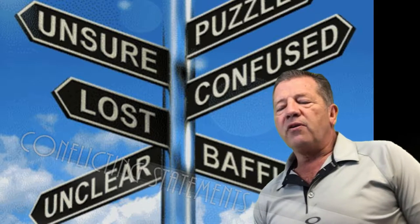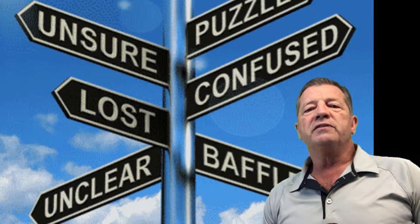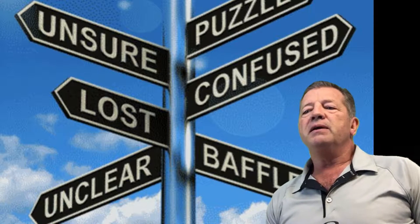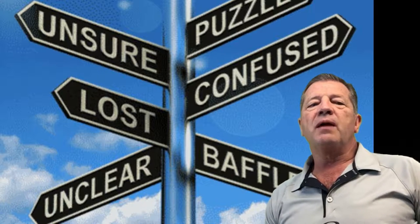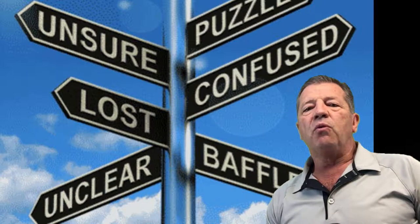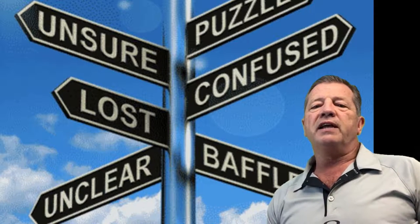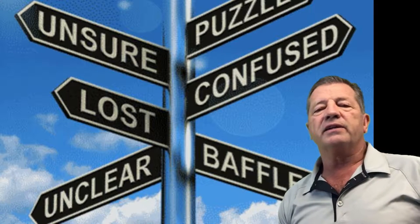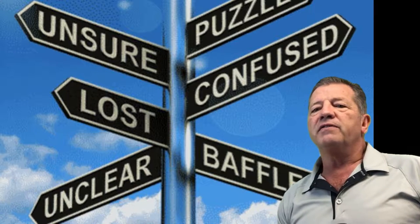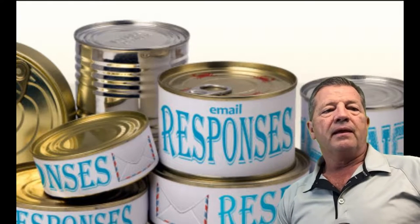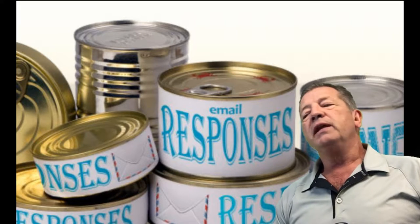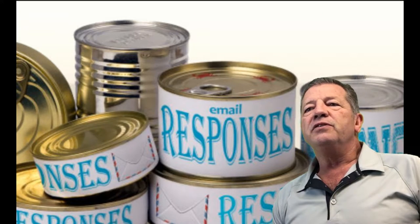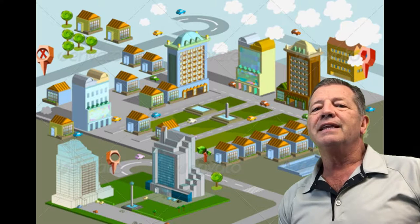For example, oftentimes an appraiser has a trainee that has assisted in the preparation of the appraisal, and the appraiser did not make an interior inspection of the property. However, the pre-printed form requires that the appraiser signing the report make the interior and exterior inspection of the subject property and an exterior inspection of the comparable sales. The appraiser then adds a comment saying they really didn't do that, which tends to be a violation of USPAP because a misleading appraisal has been created.